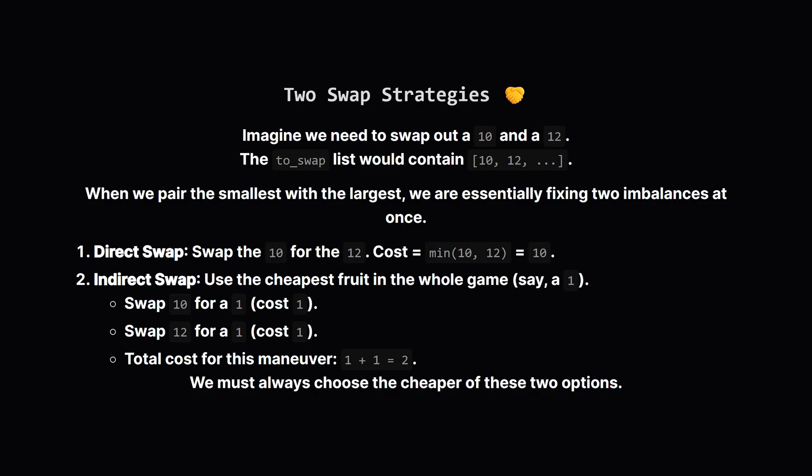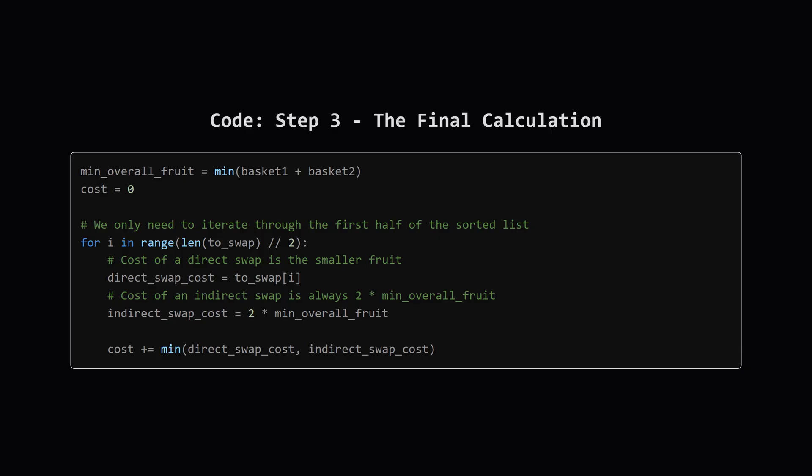Now, for the most important part of the logic, for any two fruits we need to swap, say, a 10 and a 12, we have two strategies. The to_swap list contains both of these. Because one basket is over by a 10, and another is over by a 12, we can swap them directly. The cost is the minimum of the two, which is 10. But there's a second, sneakier option. What if the cheapest fruit in the entire game costs 1? We could use that cheap fruit as a middleman. We could swap the 10 for a 1, which costs 1. And then swap the 12 for a 1, which also costs 1. The total cost of this indirect route is just 2. We always have to pick the cheaper of these two strategies. This is exactly what the final piece of the code does. It finds the absolute cheapest fruit available.